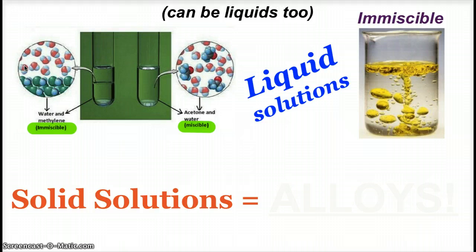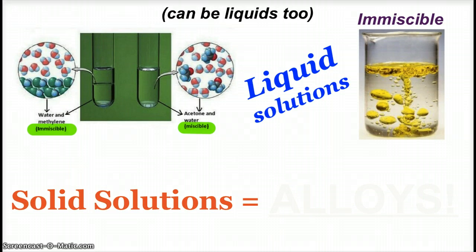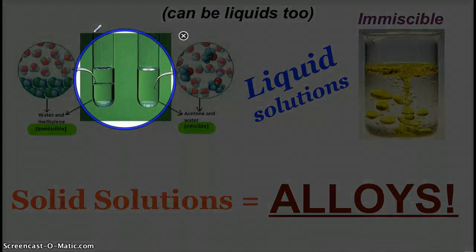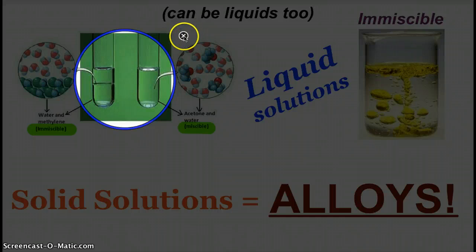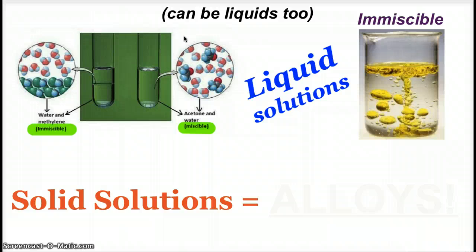Liquids can be miscible or immiscible too. When we have immiscible liquids, there's a definitive line — you can see a meniscus separating the two liquids. Whereas when you have miscible fluids, they completely blend together — that's like ultimate dissolving. When you have completely miscible fluids, the particles intertwine amongst each other and you have complete dissolvability.